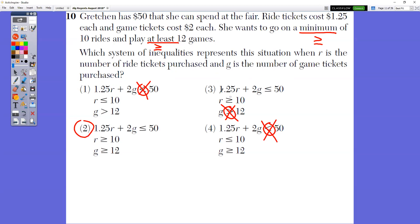And play at least 12 games. You have to be at least 16 years old to drive a car. So that is equal to 12 or more than 12. Which system of inequalities represents that? It would be choice two. We have $1.25 times the number of rides plus $2 times the number of games. She has less, she can spend less than or equal to $50 because that's all that she has. She wants to ride more than or equal to 10 rides and play more than or equal to 12 games.